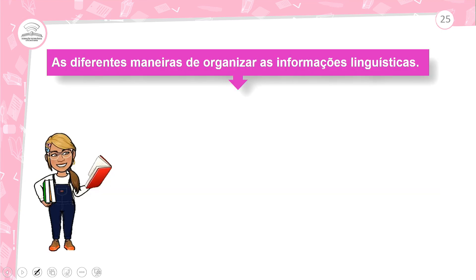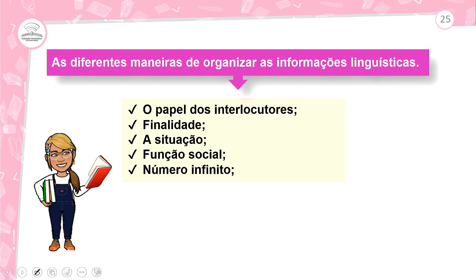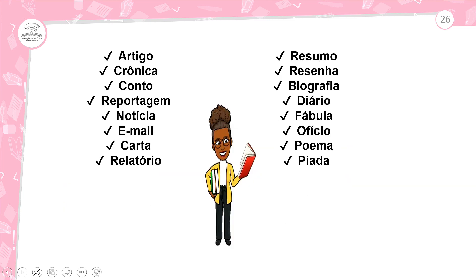As diferentes maneiras de organizar informações linguísticas consideram o papel dos interlocutores, finalidade, situação, função social e um número infinito de gêneros. Temos: artigo, crônica, conto, reportagem, notícia, e-mail, carta, relatório, resumo, biografia, diário, fábula, ofício, poema, piada — todos são gêneros textuais.